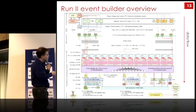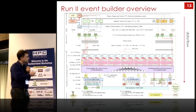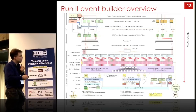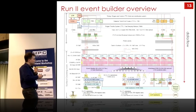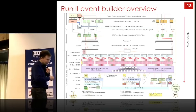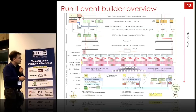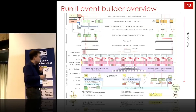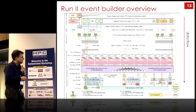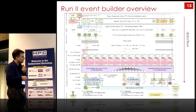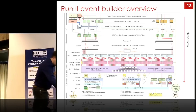Then we have the first layer of event building PCs, the fully connected InfiniBand network, the second layer of event building where the full collision data is aggregated, and distribution switches — 40 gigabit Ethernet switches using split ports to convert to 10 gigabit Ethernet — feeding the PCs running the higher-level selection in software.